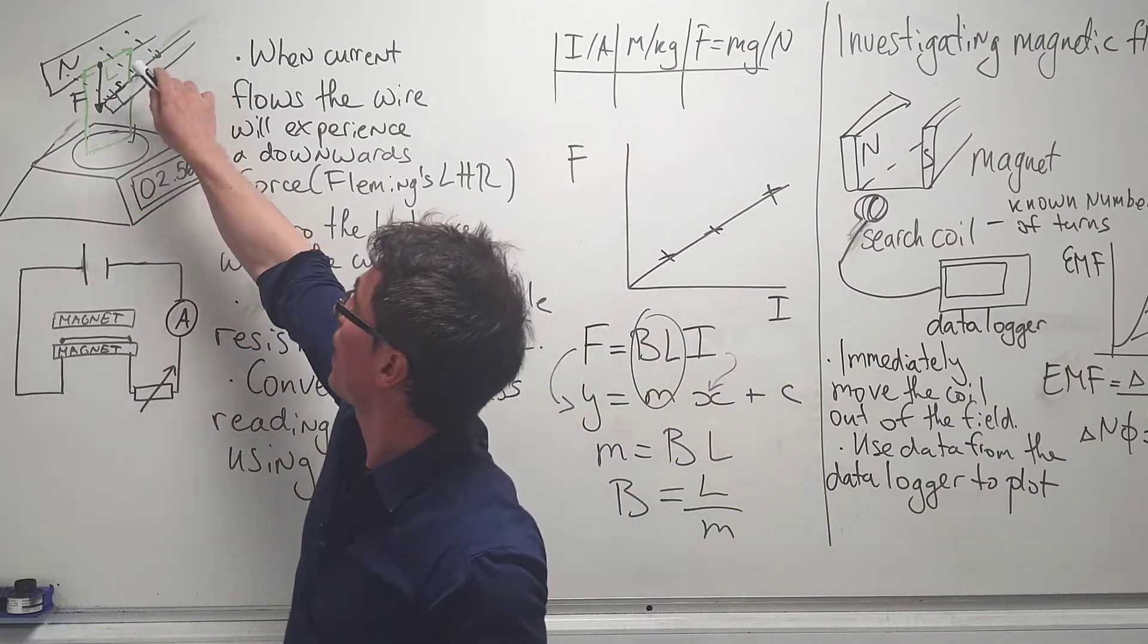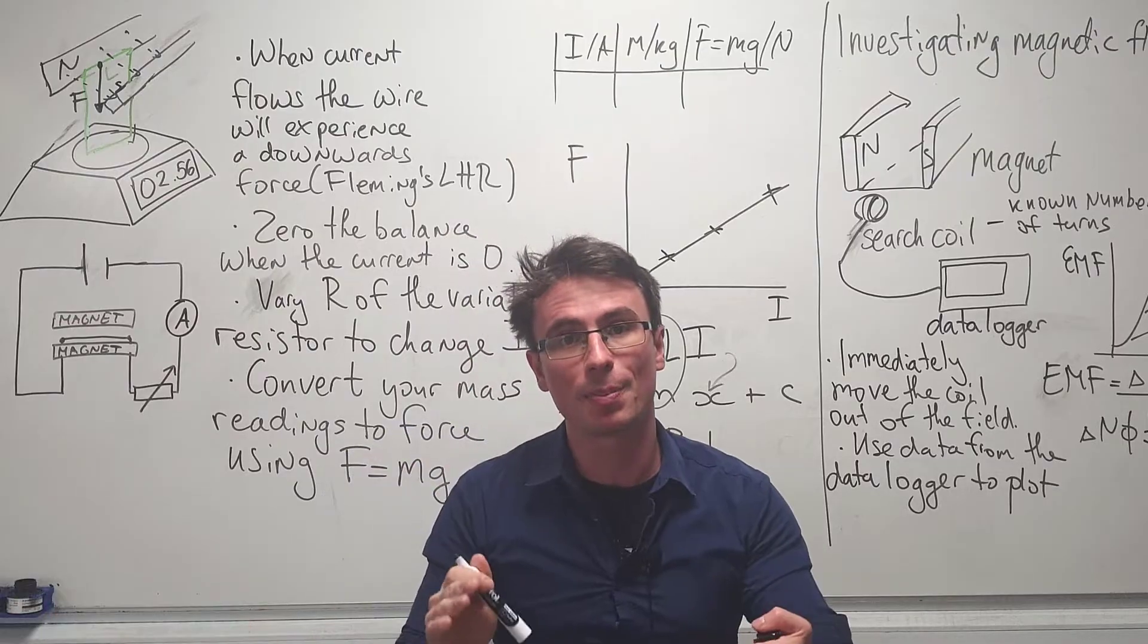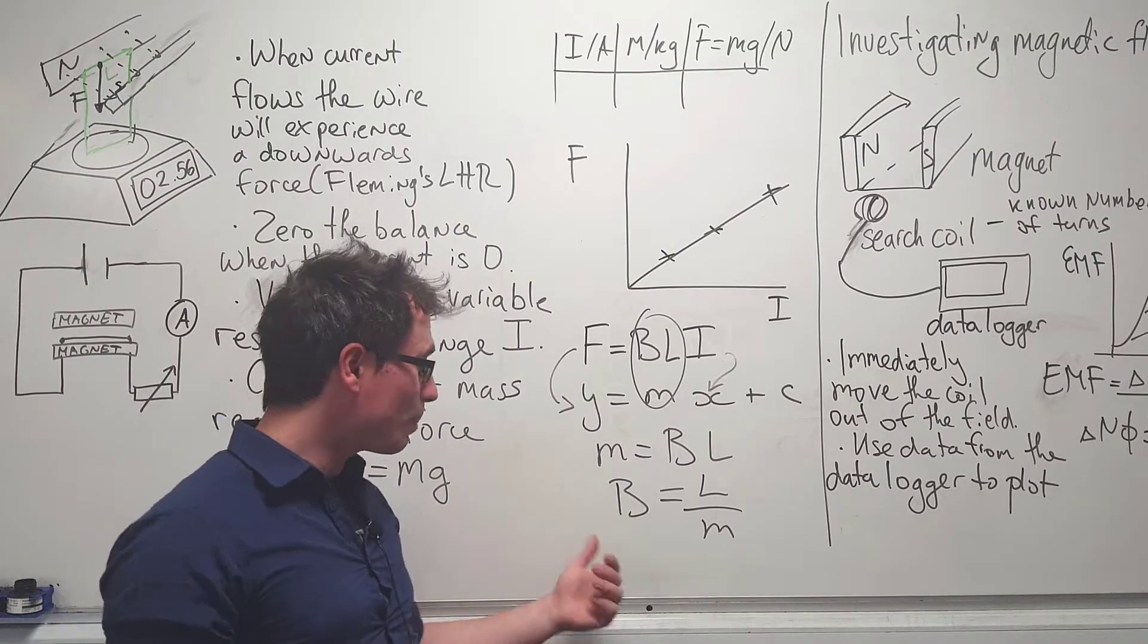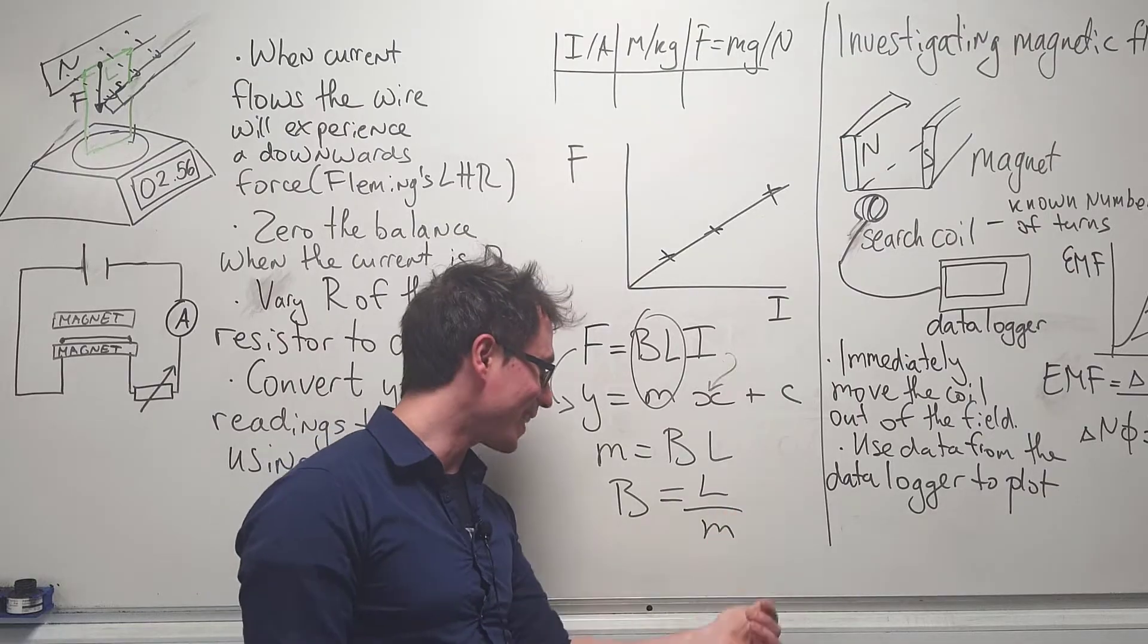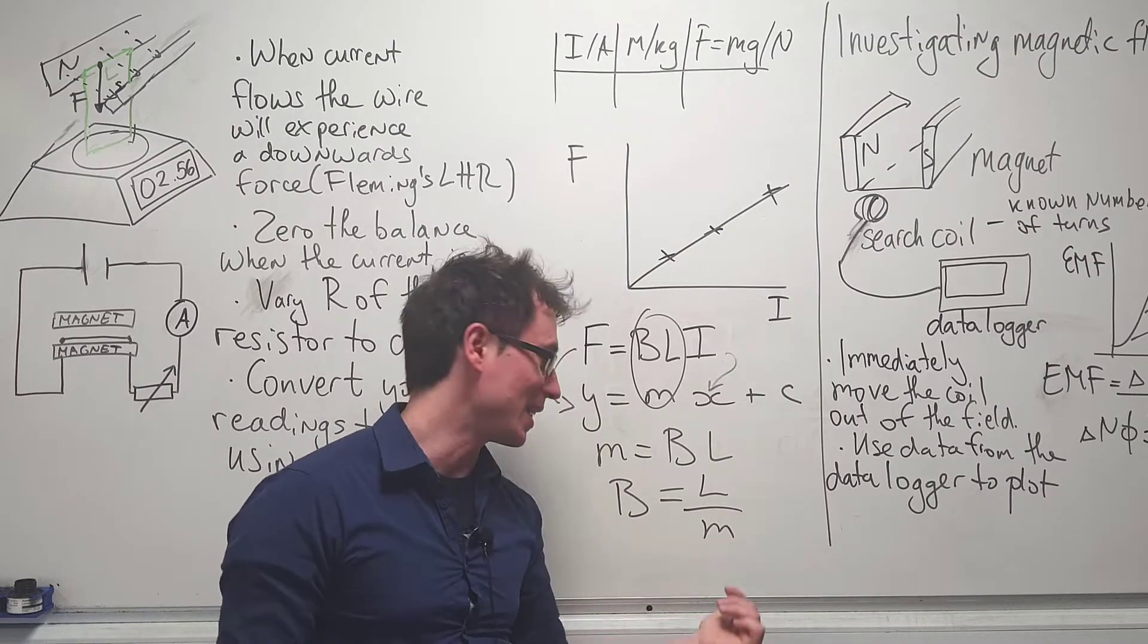Note that in this case, L is just this length here which is perpendicular to the field. We could simply rearrange for the magnetic flux density B, which will be equal to the gradient divided by the length.